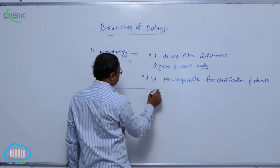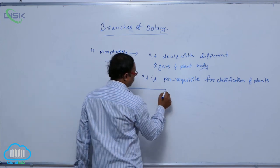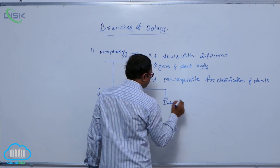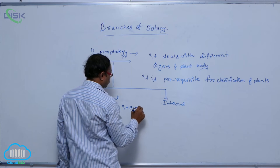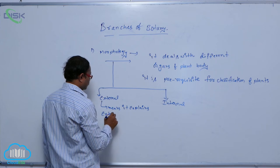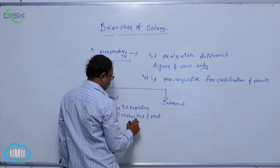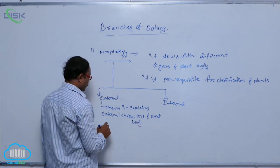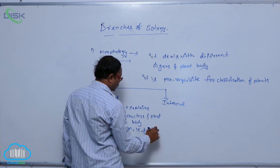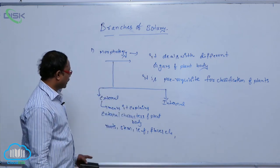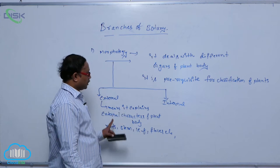Morphology is again divided into two types: external morphology and internal morphology. External morphology explains the external characters of the plant body — for example, root, stem, leaf, flower, etc. It deals with the physical appearance of these organs, which we can easily observe.